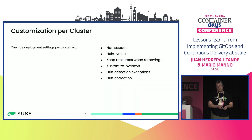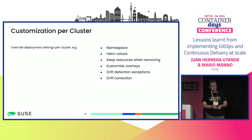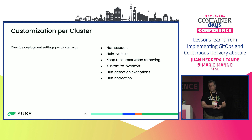Among the customizations available: you can change the namespace to deploy applications into, template Helm values, and decide to keep certain resources when removing a deployment — for example, if deploying a storage provider, you might want to keep resources in place so an accidental removal doesn't lose your persistent volumes. We support customizing overlays, and we have both drift detection and drift correction in the agent.